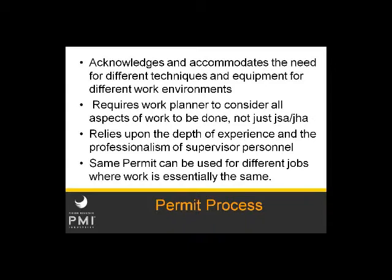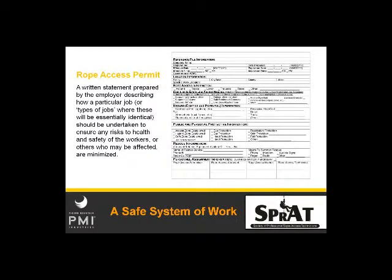That's not to say you have to do a separate permit for every single job — you can use the same permit for different jobs where the work to be done is essentially the same. A rope access permit is basically a written statement prepared by the employer that describes everything about that job. It doesn't have to look exactly like any particular example — this is just one example — and usually a rope access permit will have several pages, including drawings and diagrams of the work to be done as well as full descriptions of various things.